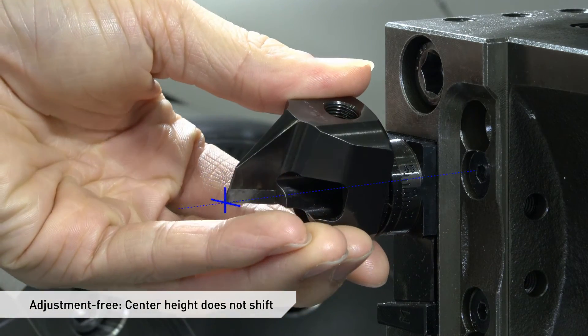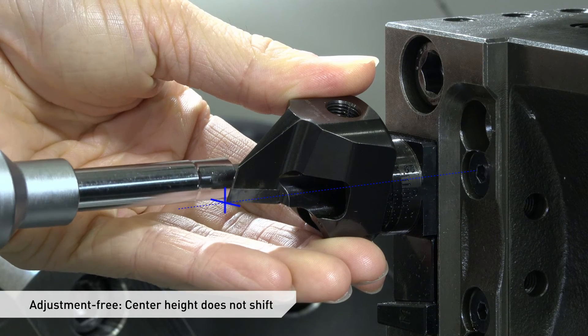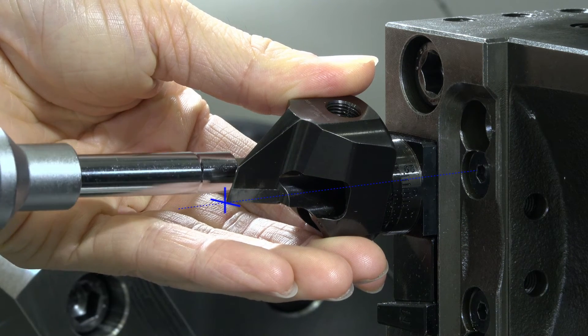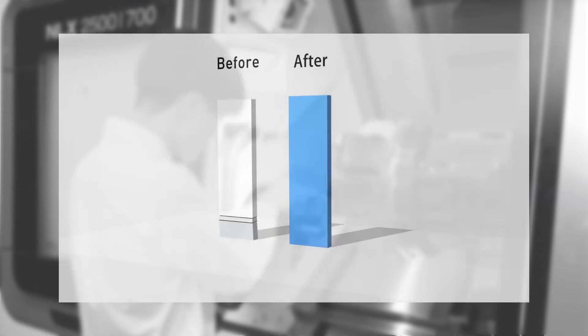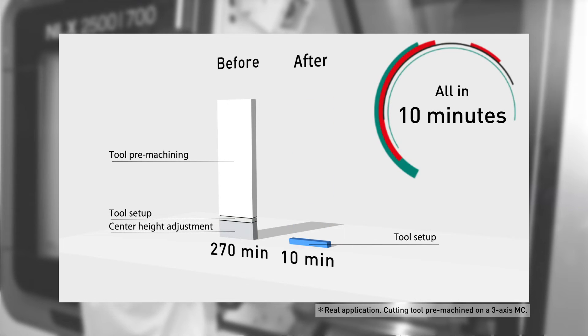In addition, the multithreading tool reduces setup time without the need for center height adjustment when changing the tool angle. With the multithreading tool, tool setup is greatly simplified and takes only 10 minutes to complete without the need for tool pre-machining and center height adjustment.